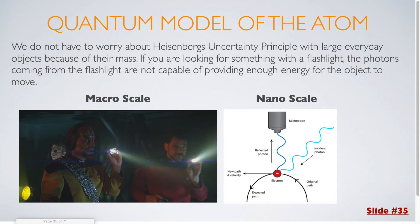We do not have to worry about Heisenberg's uncertainty principle with large everyday objects because of their mass. If you are looking for something with a flashlight, the photons coming from the flashlight are not capable of providing enough energy for the object to actually move.